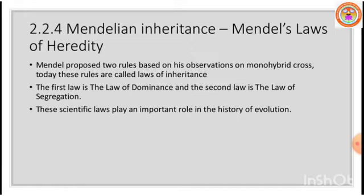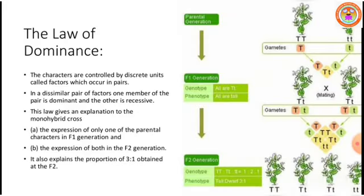Now, the Law of Dominance. The characters are controlled by discrete units. During Mendelian times, there was no term 'genes' — Mendel did not use the term genes. He called the discrete units as 'factors' or 'alleles.' These discrete units which control the characters always occur in pairs.